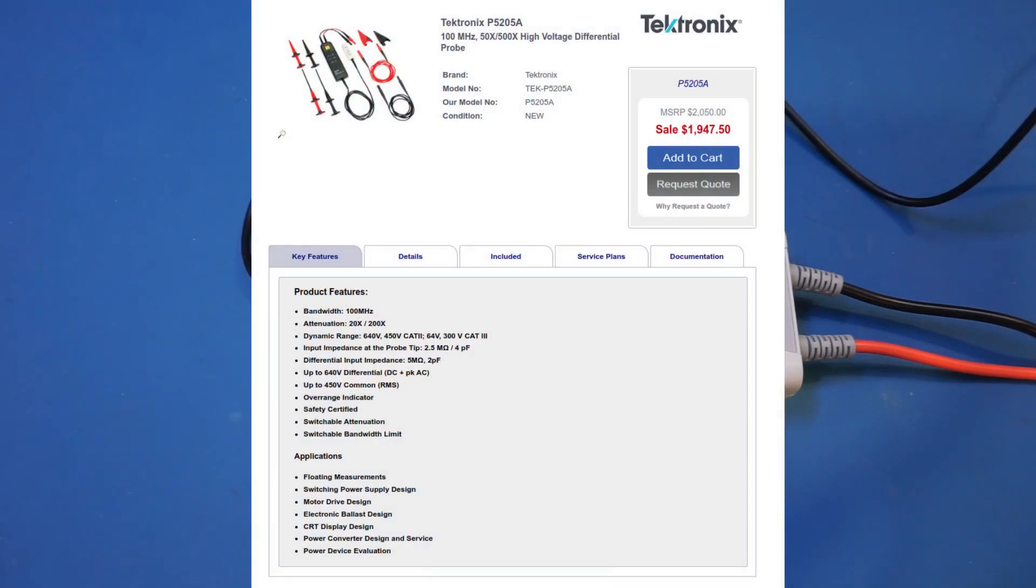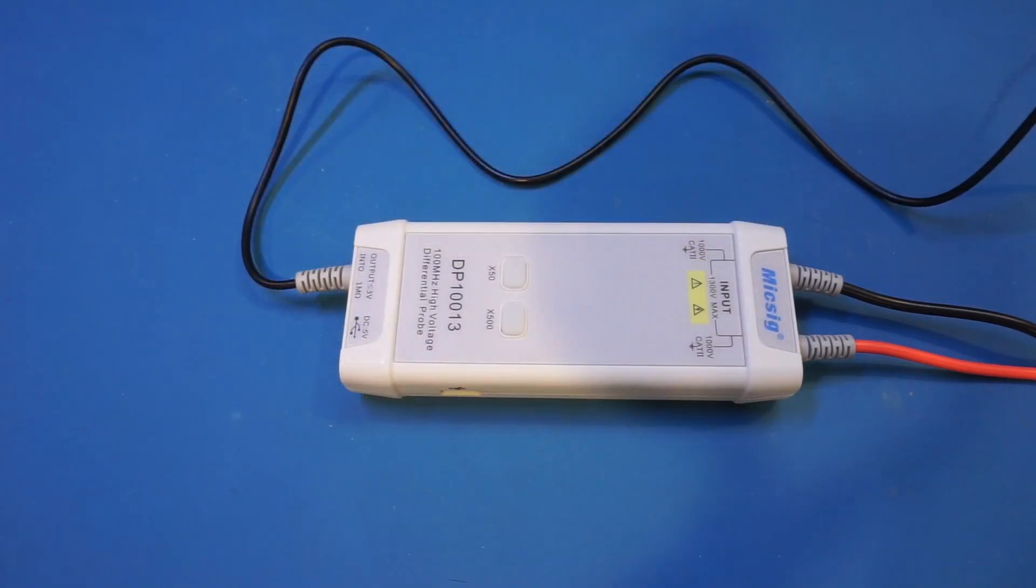A Tektronix P5205A, which has comparable specs, will easily set you back $2,000. I will leave a product link in the video description below as usual for those who are interested in getting one after watching this video.